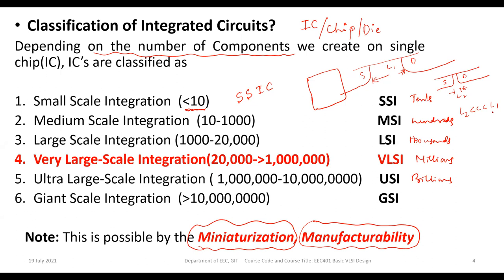It is possible to reduce the length of the transistor, but if you cannot manufacture that length, it is meaningless. Therefore, manufacturability is equally important. For any semiconductor industry, both miniaturization and manufacturability are essential — that is why integration has progressed from small scale to giga scale.